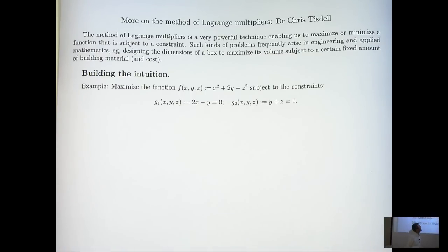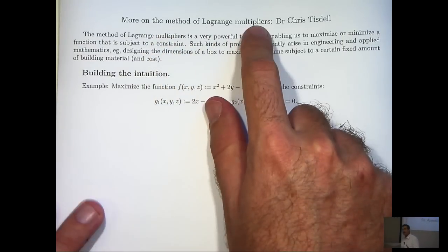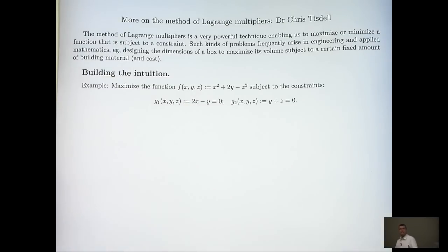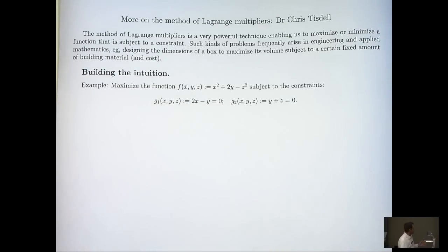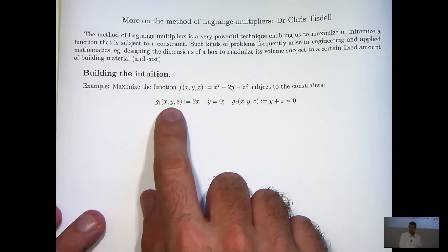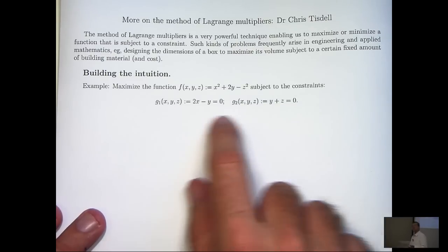Hi again everyone. In this video we're going to continue our look at the method of Lagrange multipliers. Now the example that I'm going to discuss in this video is a little bit more abstract, a little bit more complicated than the regular examples you see. In particular, the example I'm going to discuss has two constraints rather than one.